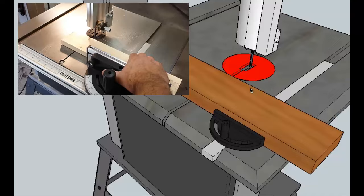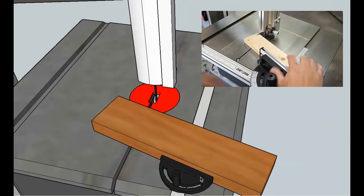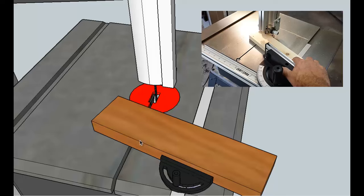You can also adjust the angle here on the miter gauge and set it for whatever angle you need. Here's an example. This has been twisted a little bit. The gauge still goes straight, but the board is now held at an angle, so this cut would be at an angle.